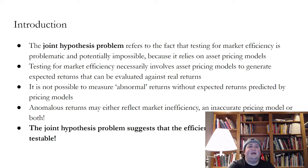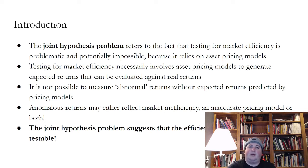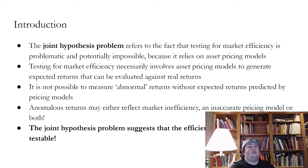Basically what that means is you then look at the real returns of an asset, for example, a stock like Coca-Cola, and then you can compare the real returns of Coca-Cola against the expected returns of Coca-Cola. It's not possible to measure abnormal returns without expected returns predicted by pricing models. Anomalous returns may either reflect market inefficiency or an inaccurate pricing model, or both.